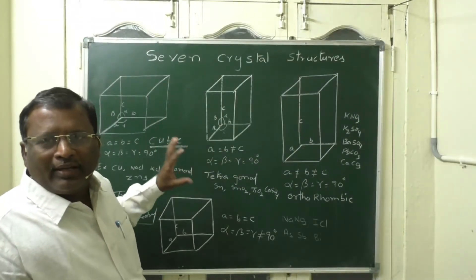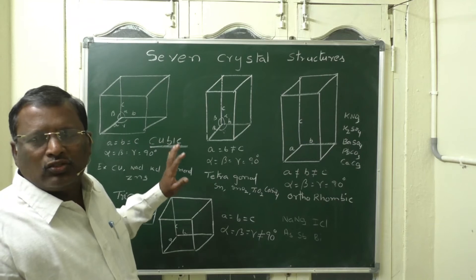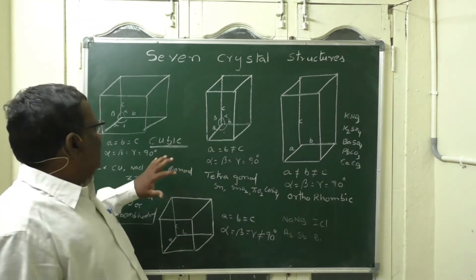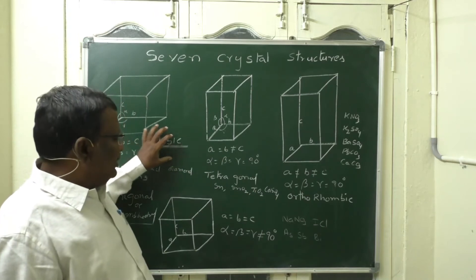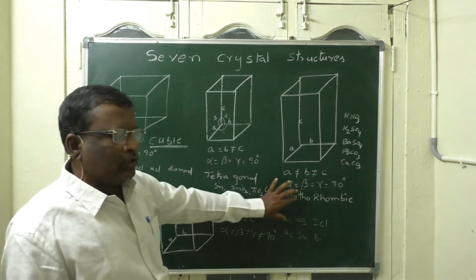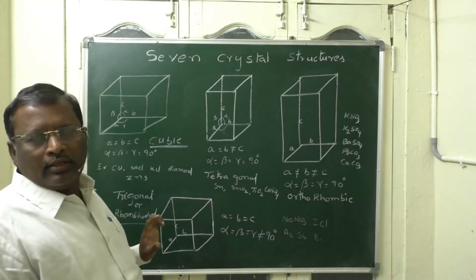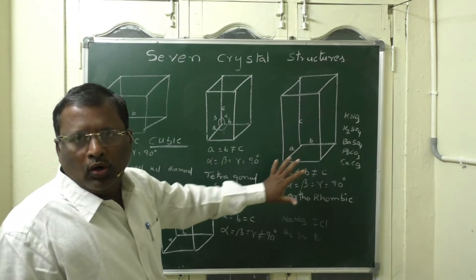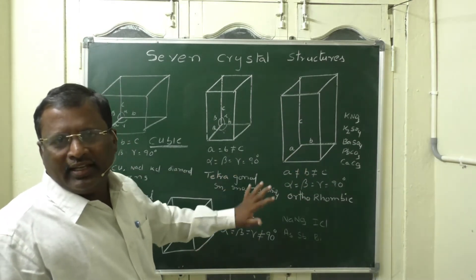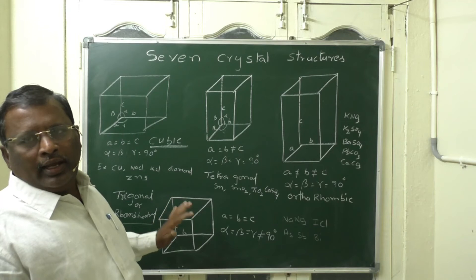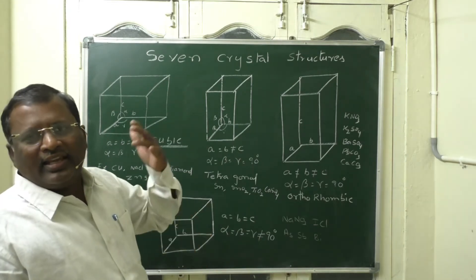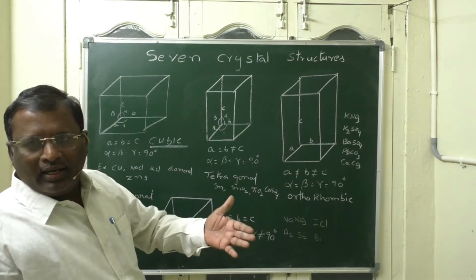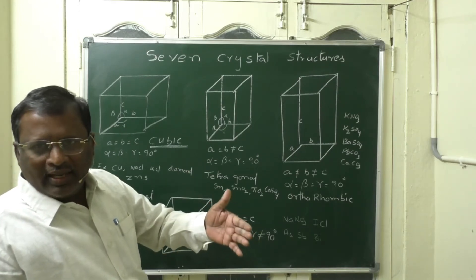We need a pattern to remember these seven structures. The first four can be remembered as C, T, O, T: cubic, tetragonal, orthorhombic, and trigonal. The remaining three are H, M, T: hexagonal, monoclinic, and triclinic.